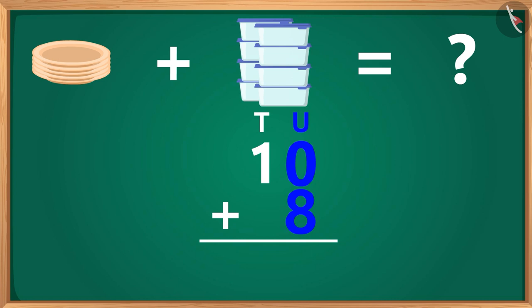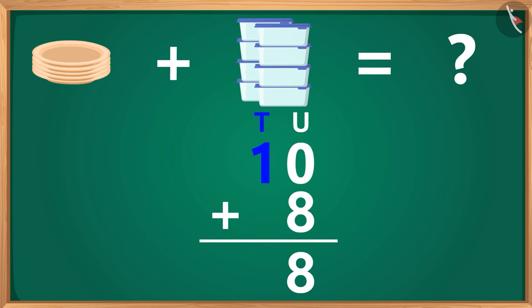Mom, when we add a number to 0, the answer for the total number is equal to the number we have added with 0. So, here we will write 8 like this in the unit's place. Now, 1 is written below the 10th part. So, we write it here like this.